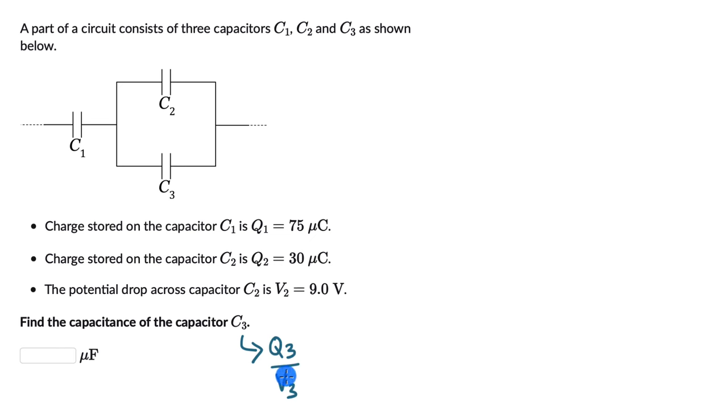We can already figure out what is V3 because the potential drop across C3 will be the same as the potential drop across C2. They are connected in parallel and we know this is 9 volts.